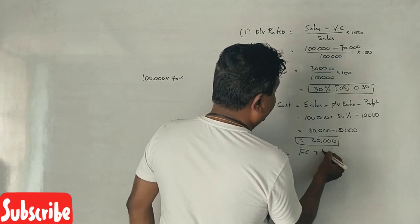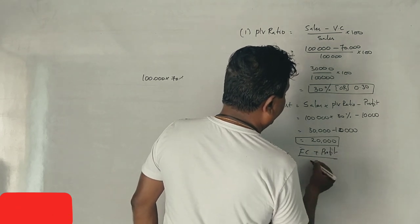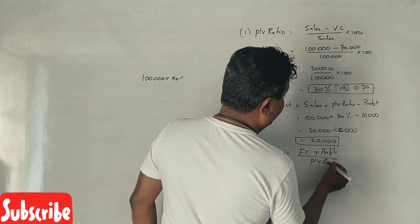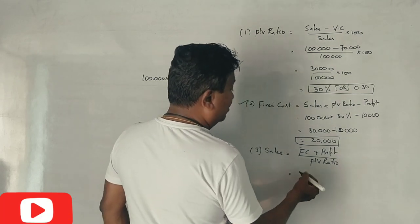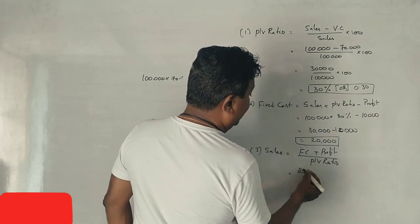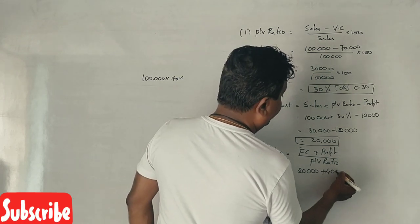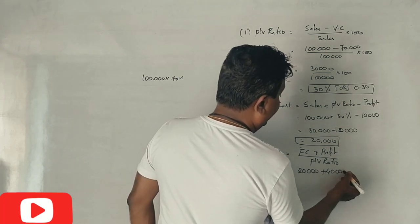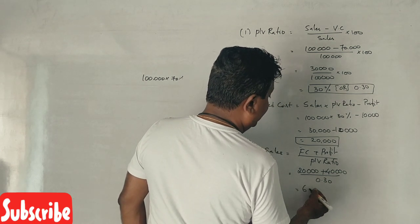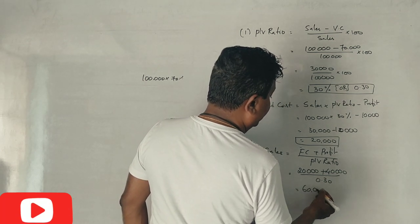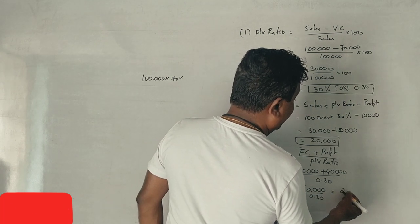Sales required equals fixed cost plus profit, divided by PV ratio. That is 20,000 plus 40,000, which is 60,000, divided by 0.30, equals ₹2,00,000 rupees.